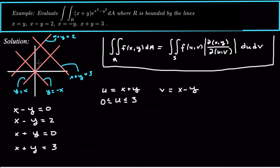And v goes from this line — this is the line v equals 0 — to the line v equals 2. So v ranges from 0 to 2. As you change the right-hand sides of those boundary equations, you get different lines: v equals 0 is one boundary line and v equals 2 is the other boundary line.